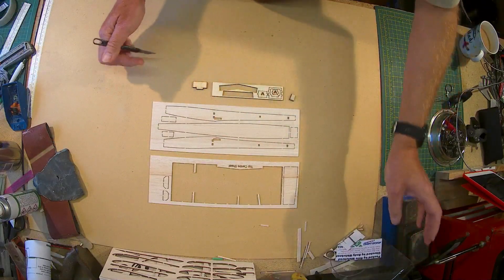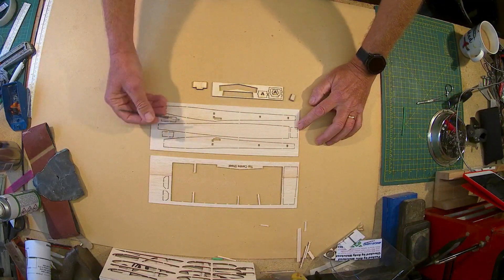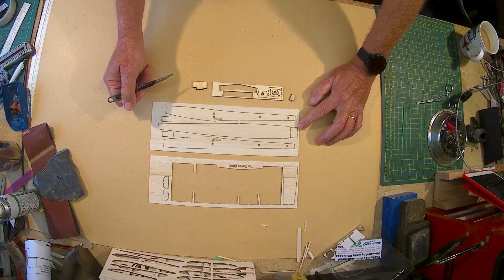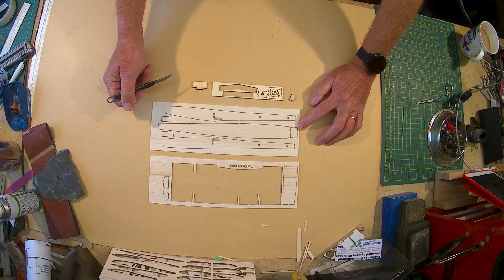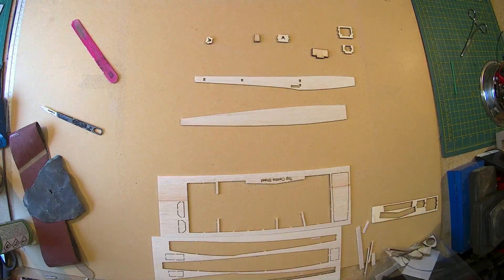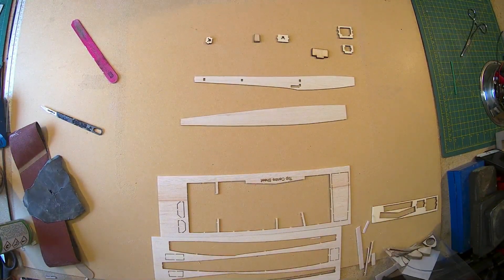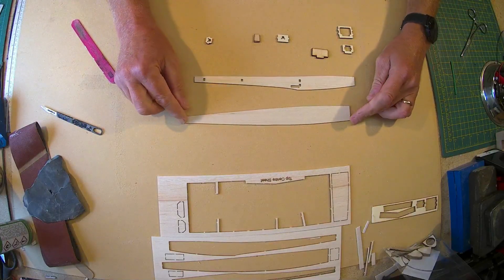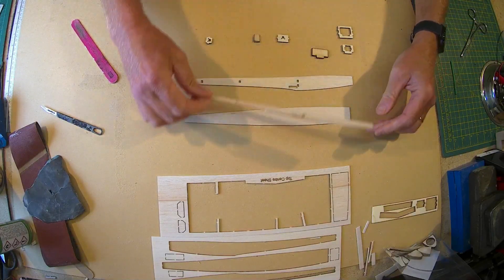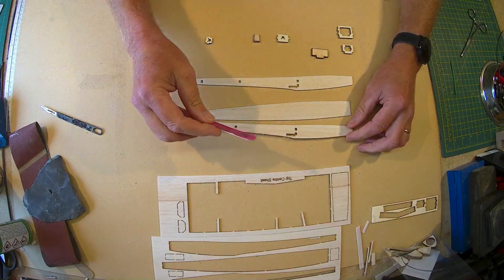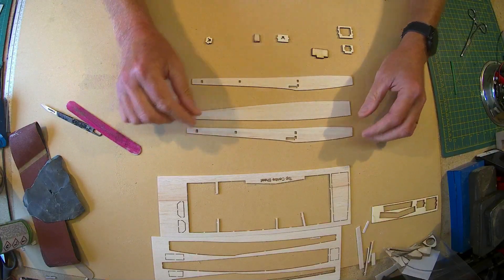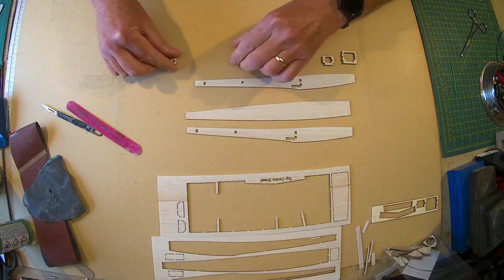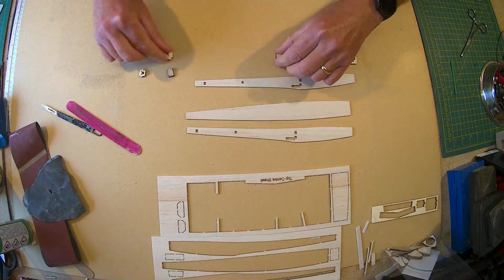So the idea is we need to cut these out and then just clean and sand them to shape, and then we'll start the gluing. Okay, so I've cut out the three major parts for the fuselage and I've just gently cleaned around with the emery board and cut all the ply formers out.